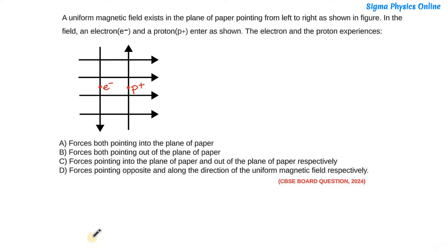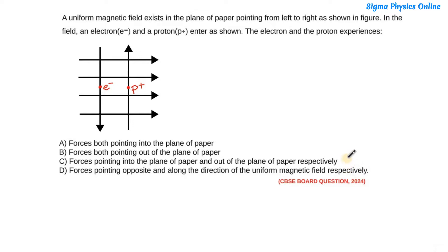The next question says: a uniform magnetic field exists in the plane of paper pointing from left to right as shown in the figure. In the field, an electron and a proton enter as shown. The electron and the proton experience: forces both pointing into the plane of paper; forces both pointing out of the plane of paper; forces pointing into the plane of paper and out of the plane of paper respectively; and forces pointing opposite and along the direction of the uniform magnetic field respectively.